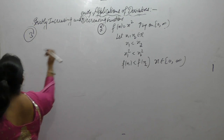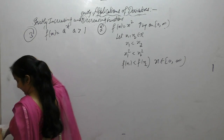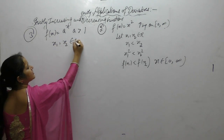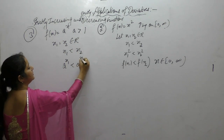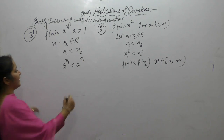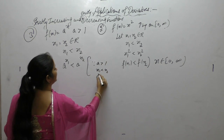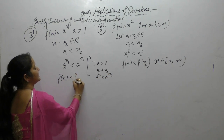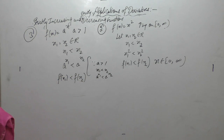Show that the function f(x) = aˣ, where a > 1, is strictly increasing on ℝ. Let x₁, x₂ belong to ℝ. Because a > 1, if x₁ < x₂ then aˣ¹ < aˣ². This means f(x₁) < f(x₂). Therefore the function is strictly increasing.